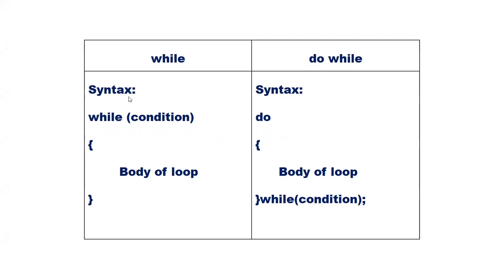The syntax for while loop is: while(condition) { body of the loop }. The syntax of do-while loop is: do { body of the loop } while(condition); The while loop executes the body of the loop as long as the condition is true.